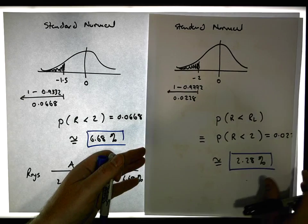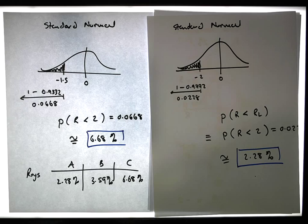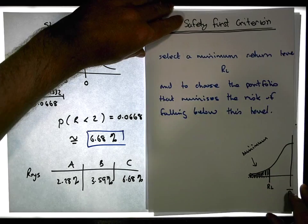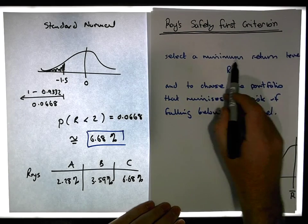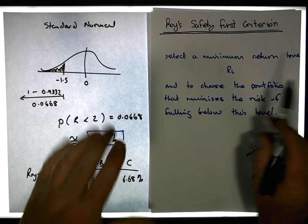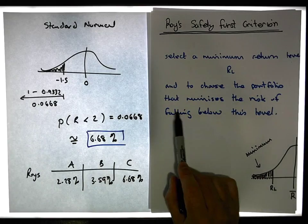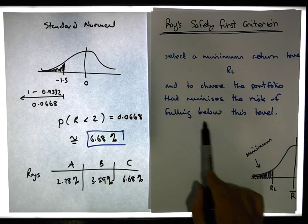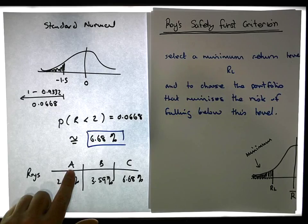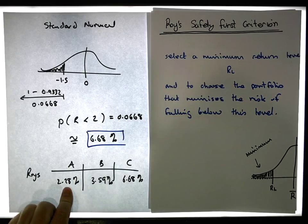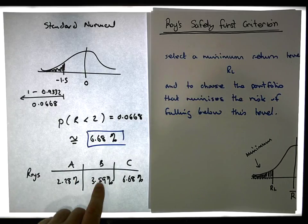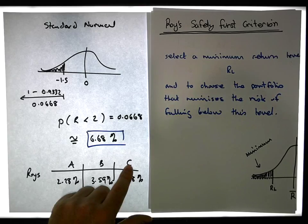And what Roy's criterion tells us to do is it says select the minimum return level, which is 2% in this case, that we're willing to accept, that's our pain level, and to choose the portfolio that minimizes the risk of falling below this level. So you can see portfolio A will only fall below this level 2.28% of the time, B 3.59% of the time, and C 6.68% of the time.